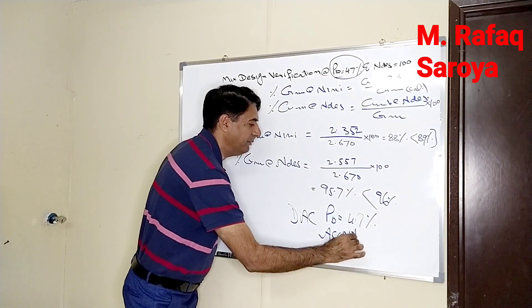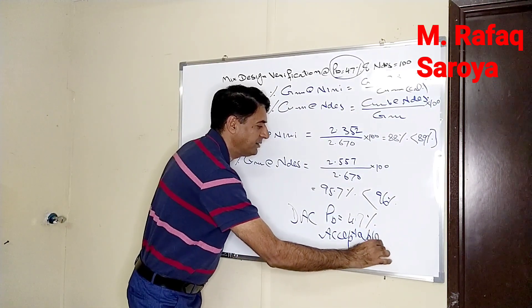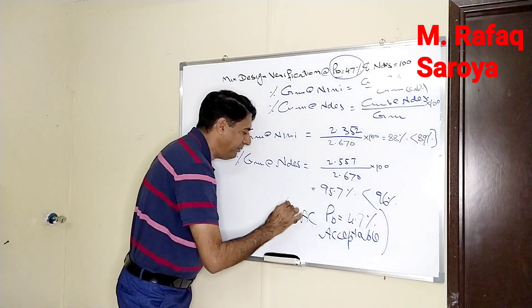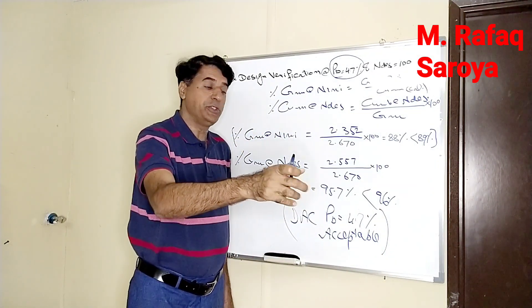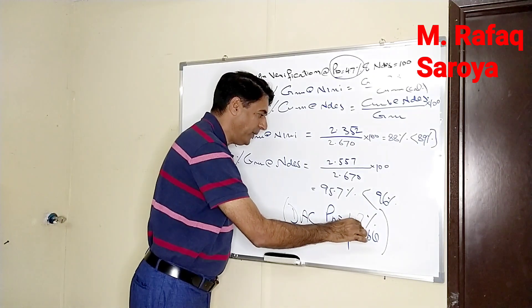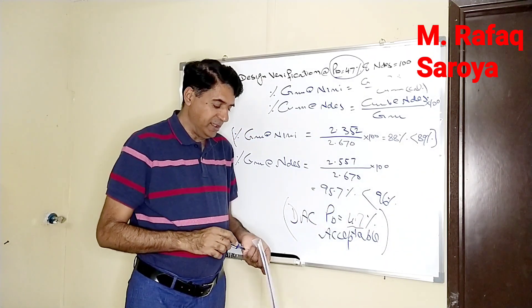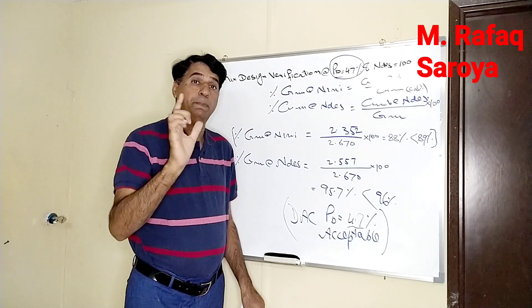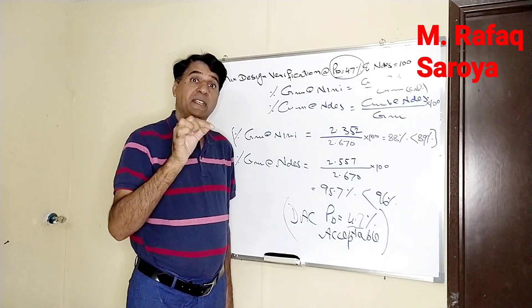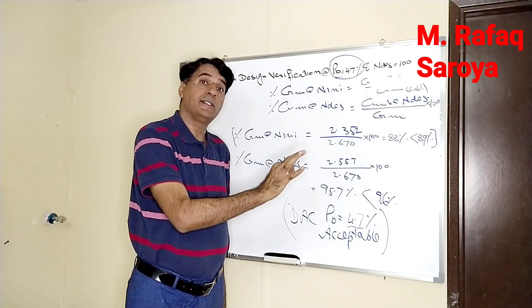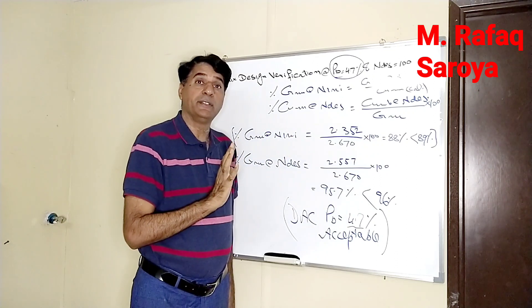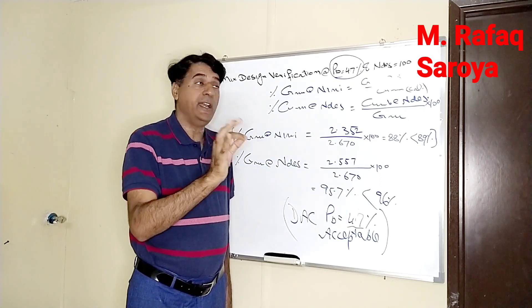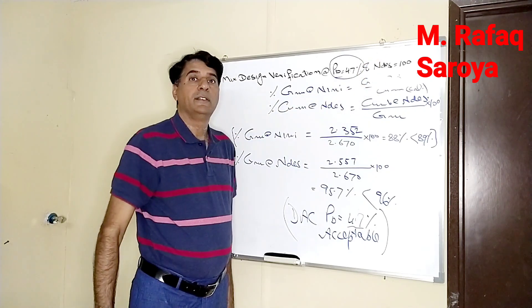I would like to tell you that whenever we are going to produce a material to be used on the site, when 4.7% binder content is used, it is being accepted. It is the final step of our design, the verification at this number of gyration, 100 gyration.